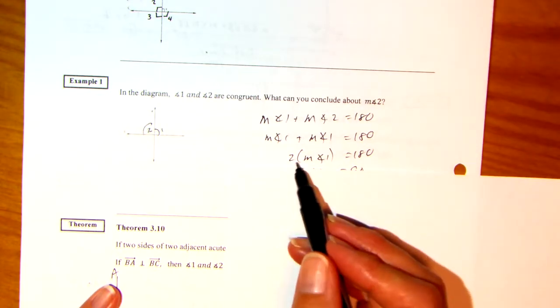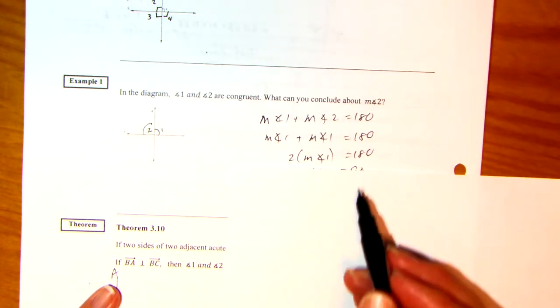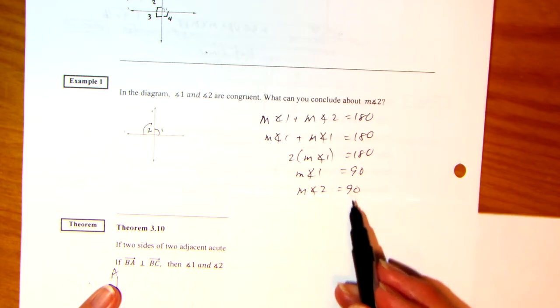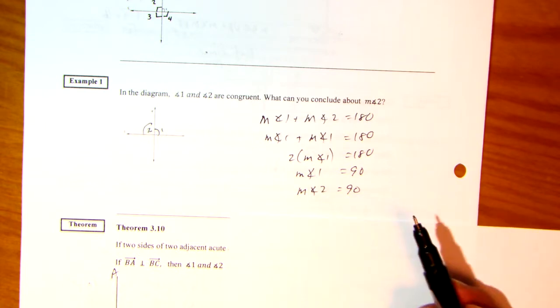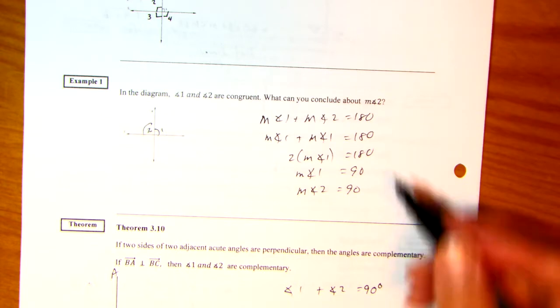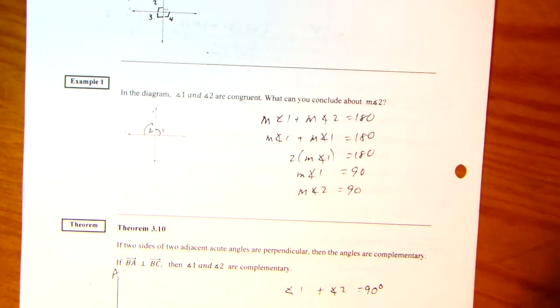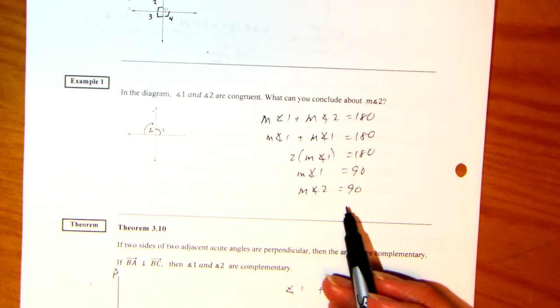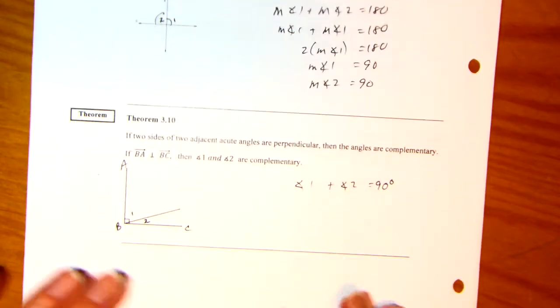When I'm adding those, I have two measure of angle 1s. Divide both sides by 2. Resubstitute. Both angles equal 90 degrees. So measure of angle 2 is also 90. This wasn't really a proof, but they wanted to know what can you tell me about that. Alright.